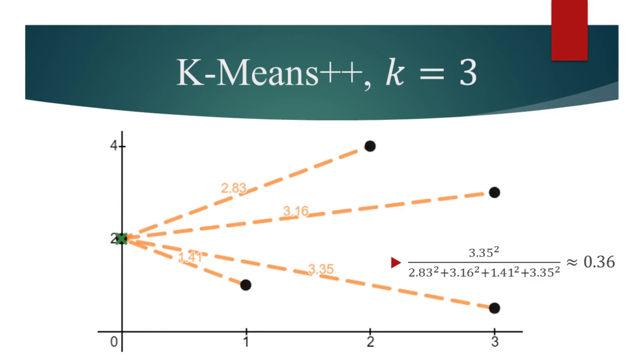The probability for a point to be chosen as the next centroid is evaluated by squaring its distance and dividing it by the sum of distances squared.